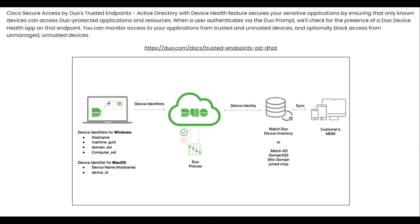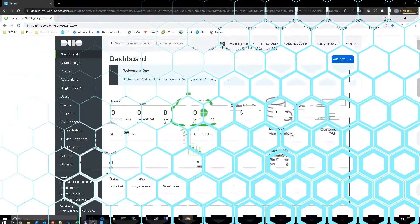Here's a diagram that shows the endpoint where there are device identifiers for Windows and Mac. There are a couple of things we can look for — we've got Duo policies and identity that we can sync with the customer's MDM, and we can determine whether or not an asset is a trusted asset to access those applications and build policies based on that. Really neat stuff.